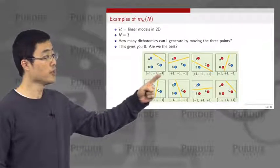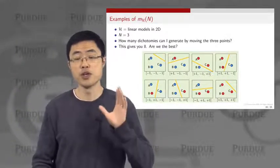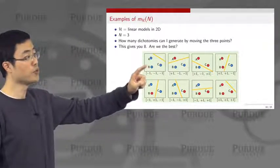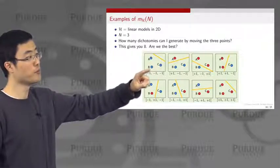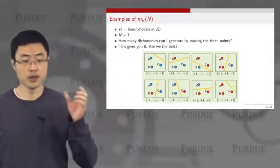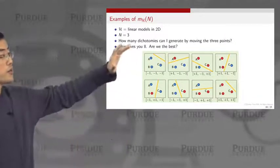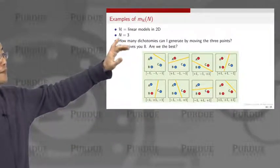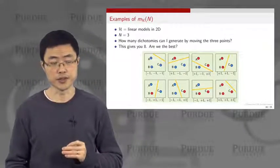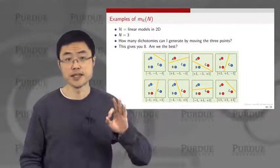You can have minus, minus, minus one all the way to plus, plus, plus one — that would be altogether just eight possible choices. Now, no matter how you locate your data points — you can move B here, move A a little bit upper, move C a little bit lower — that is not going to change the labels. Therefore, when you have a linear model in 2D with three data points, the number of dichotomies is eight, and we conclude that mH of 3 equals 8.